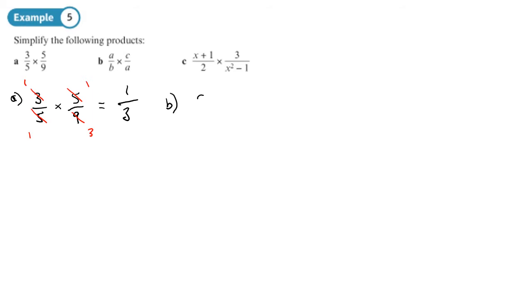We'll do the same with B. We'll see if we can cross-cancel A over B times C over A. Yes, we can cross-cancel. So we can cancel those A's out. We end up with 1 times C over B times 1. So we end up with C over B.